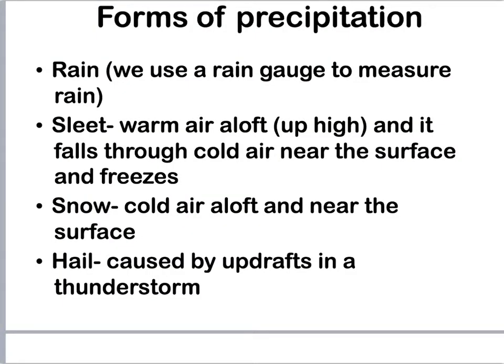Our last topic is the forms of precipitation. There are four types. Rain is the most common, and we use a rain gauge to measure it. Second, we have sleet — this is when warm air aloft causes rain to fall through cold air near the surface, and that raindrop freezes as it hits or just before it hits the ground.